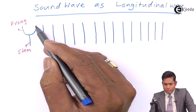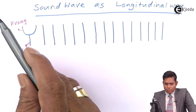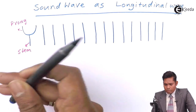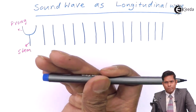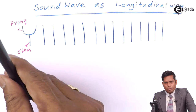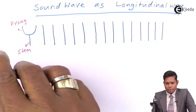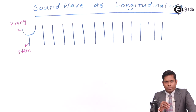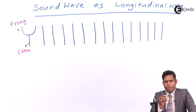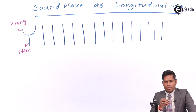When this prong goes outward, it will continue to move outward and inward. Outward and inward — this is the motion of the prong.